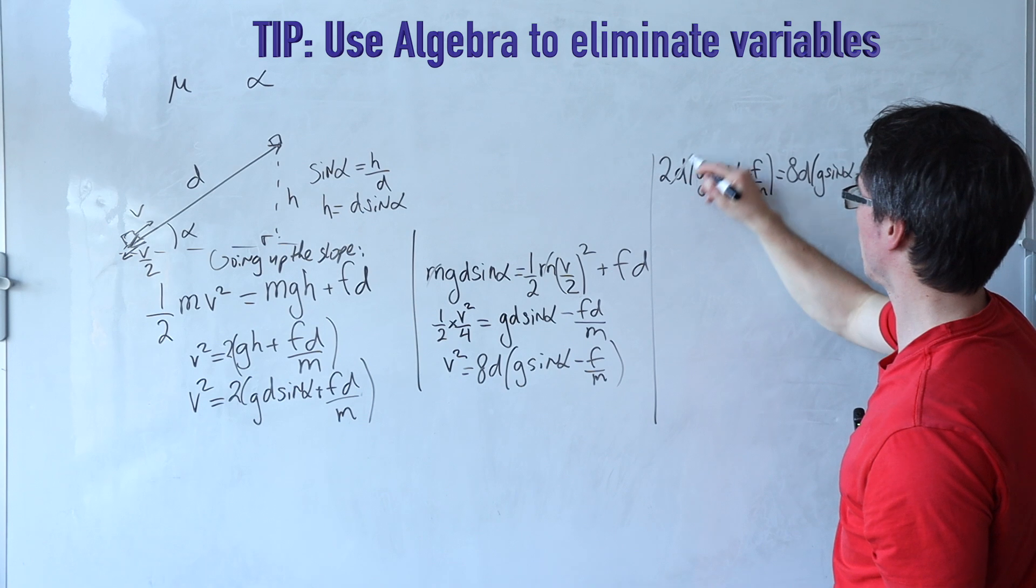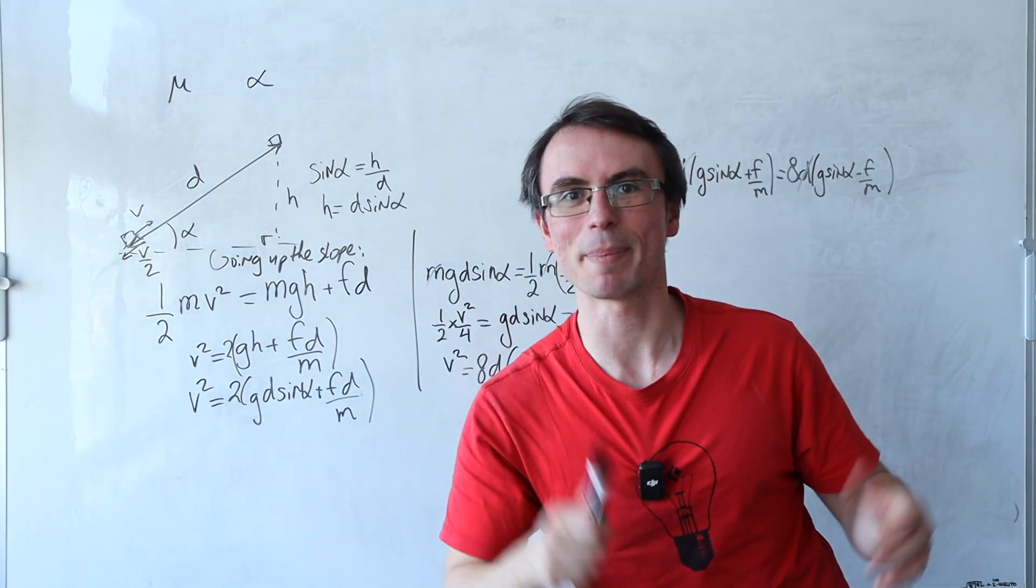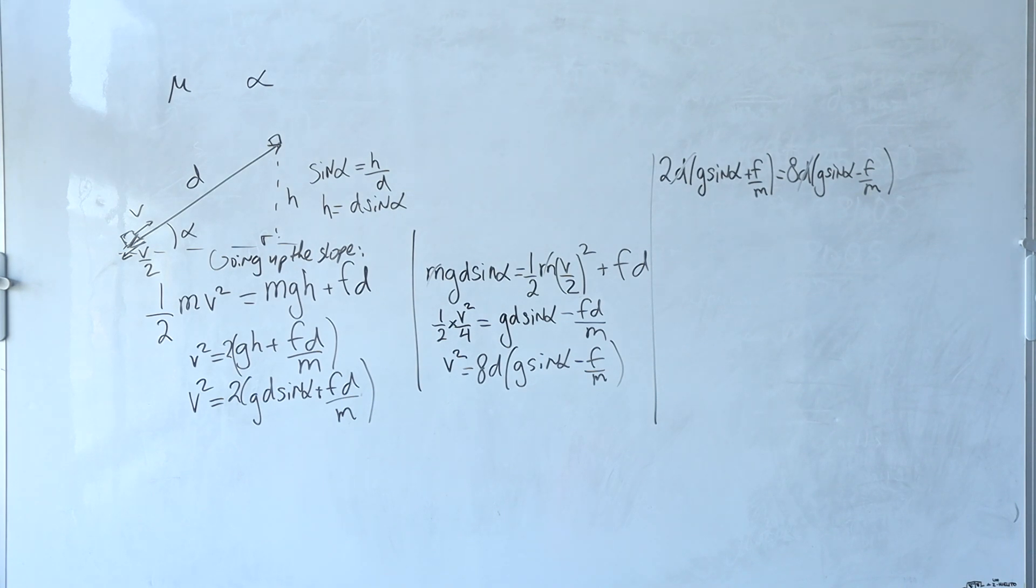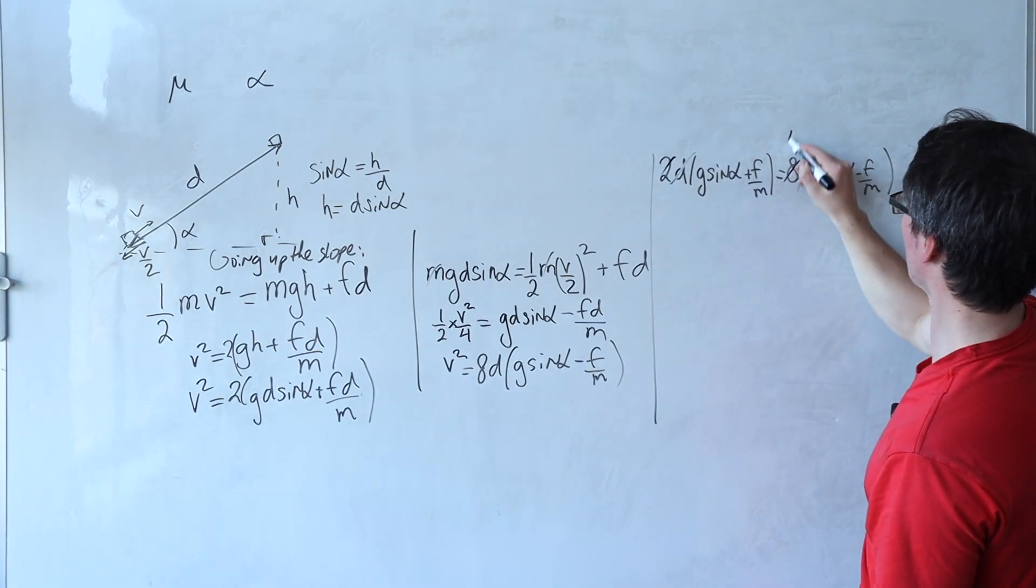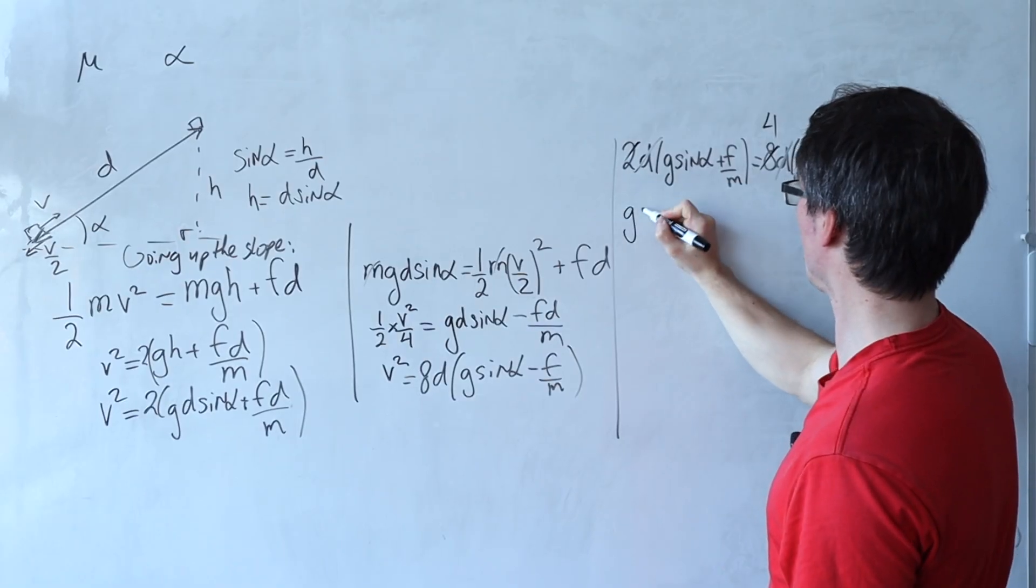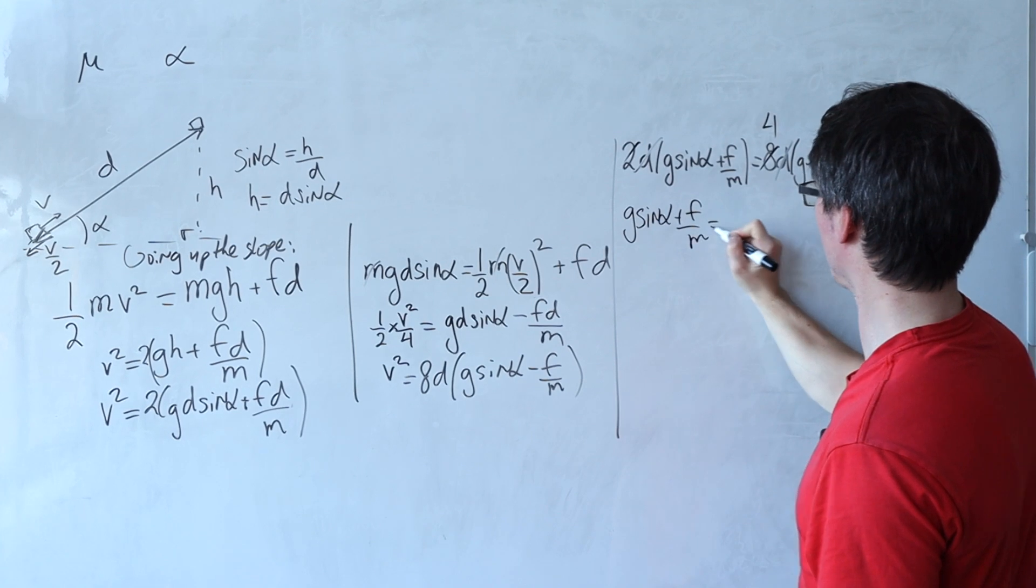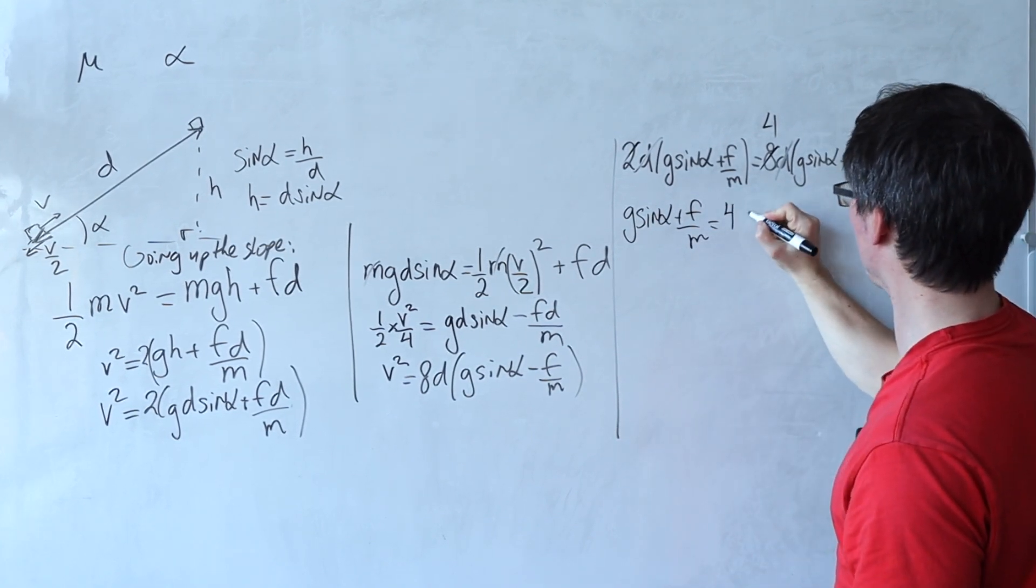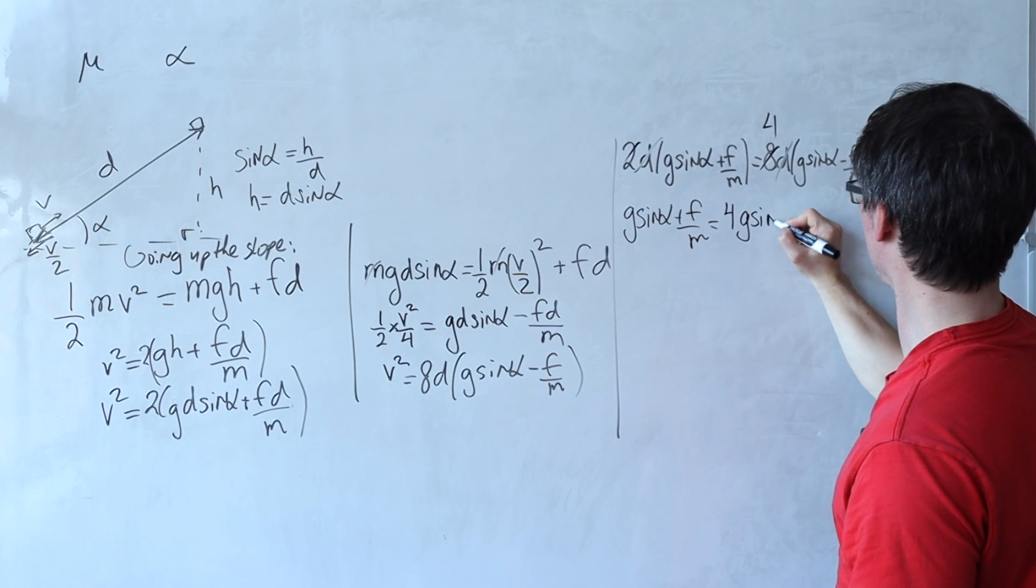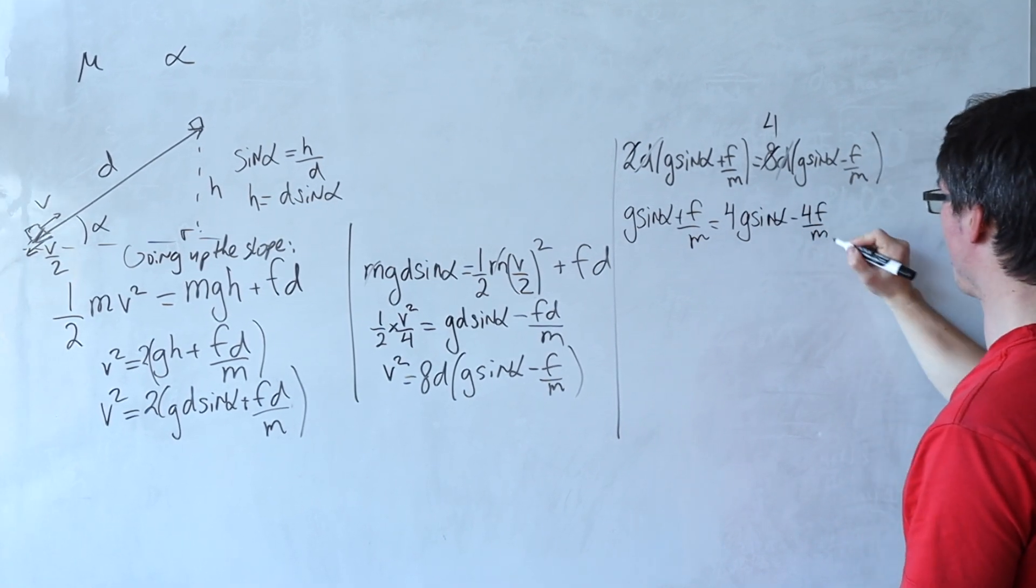Okay, let's cancel out the factor of d over here. Let's get a slightly better pen. We can also cancel the 2 and the 4. Oh, this pen is so much better. So we get g sine of alpha plus f over m is going to be equal to 4g sine of alpha take away 4f over m.